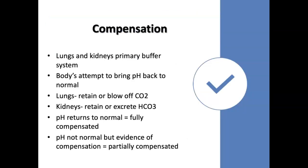The lungs and the kidneys are the primary buffer systems — the body's attempt to bring the pH back to normal. The lungs can either retain or blow off CO2, which becomes carbonic acid when combined with water. The kidneys can either retain or excrete bicarb. If the pH returns to normal, that's fully compensated. But if the pH is not normal yet there's some evidence of compensation, it's a partially compensated state. We'll review that when we go through reading ABGs.